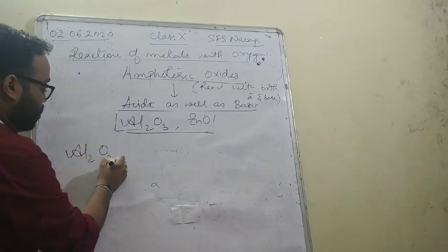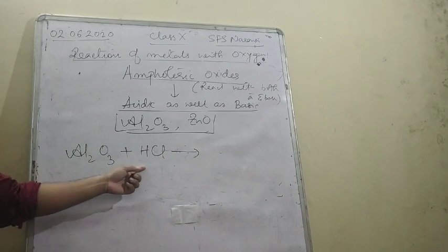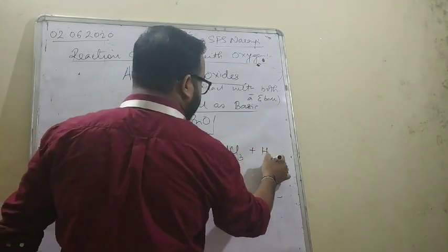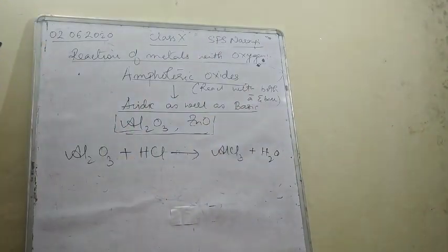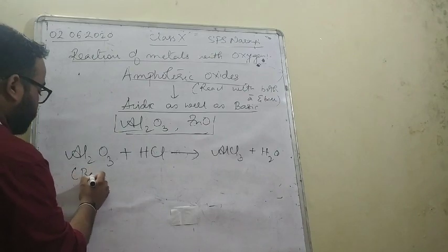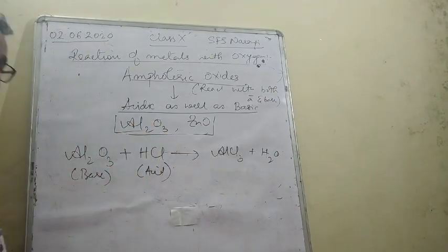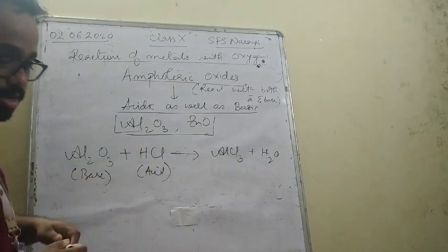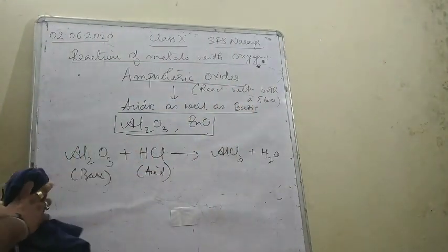For example, Al₂O₃ — if it reacts with HCl (an acid), it will give you salt plus water. You can do the balancing on your own. Here Al₂O₃ is acting as a base. And here Al₂O₃ is acting as a base while HCl is acting as an acid, giving salt plus water.